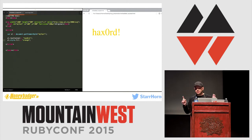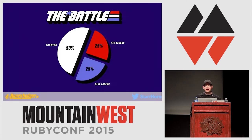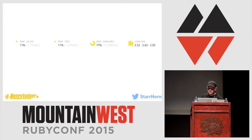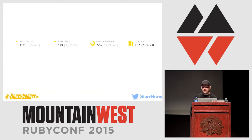So congratulations — you guys are now SVG experts. You know everything there is to know. But that's only half the battle. The other half is making some charts. We're going to make three types of chart: a bar chart, a line chart, and a donut chart. Let's get started.